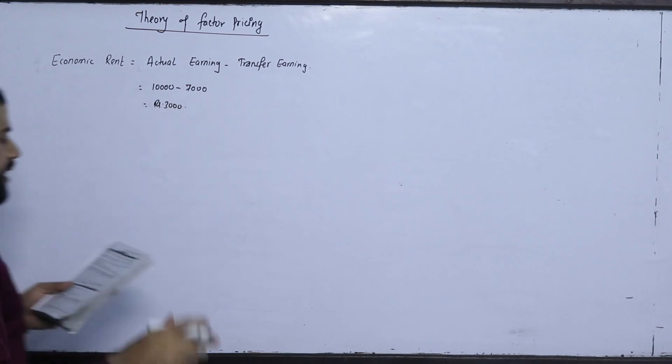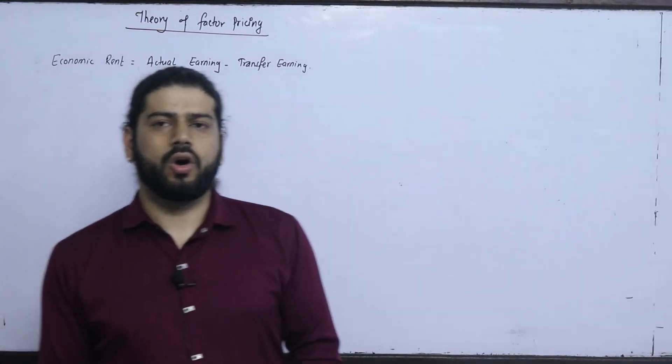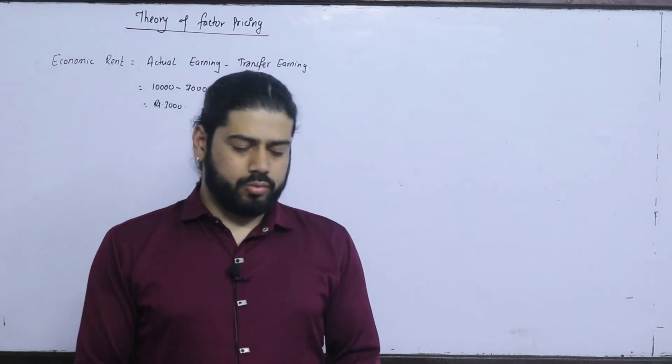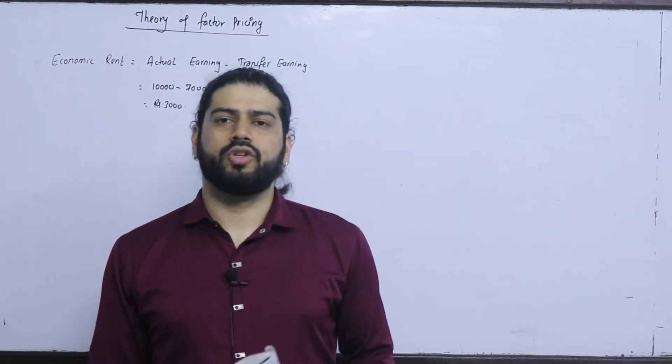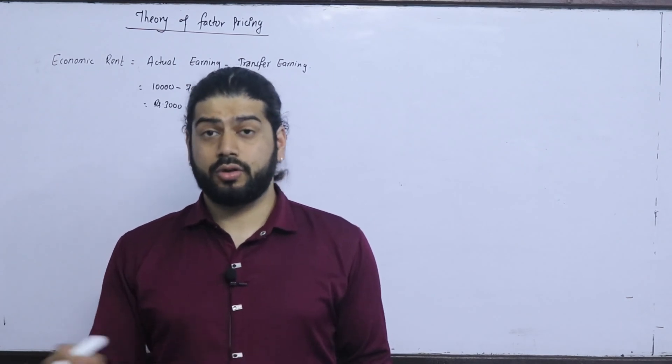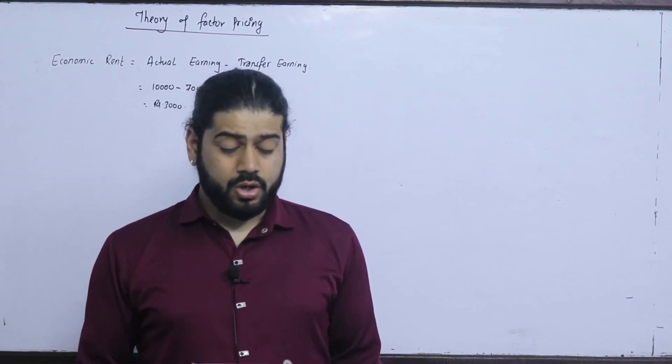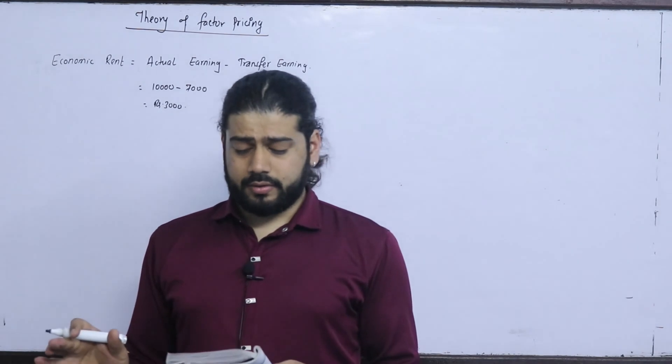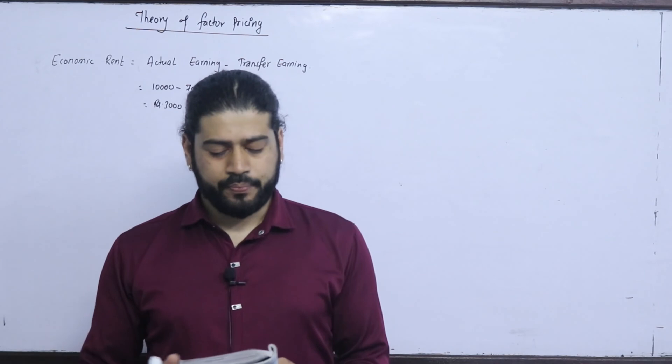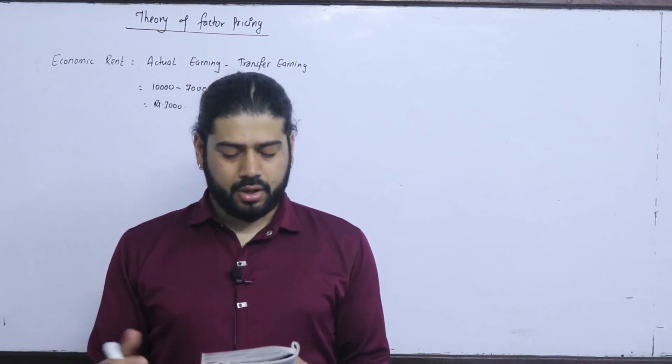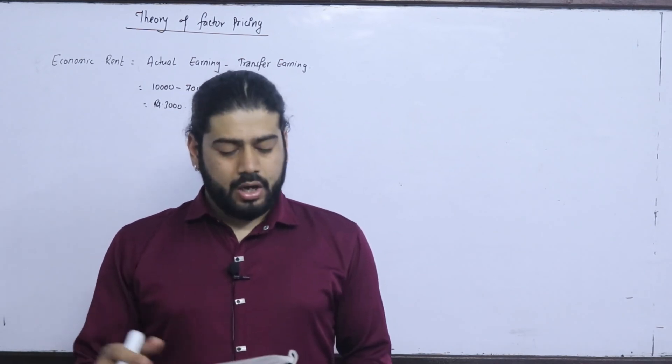In this class, the explicit cost, the accounting profit, the economic profit, this type will be separated and numerical. I will tell you the link in the description. Now, what is the transfer earnings or economic earnings? The economic profit is separated. In this class, there is another question.